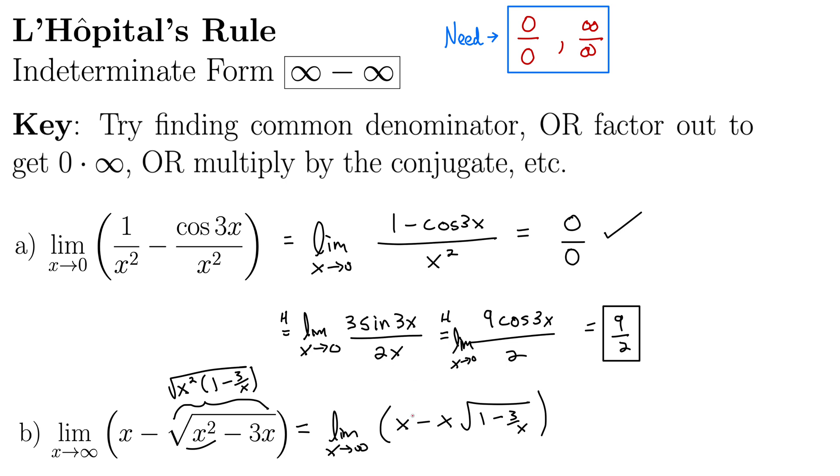You may be saying, shouldn't that be absolute value of x because the square root of x squared is absolute value of x and we only wrote x? Well, since we're going off to infinity anyway, it's safe to assume without loss of generality that x is positive as we evaluate this limit.